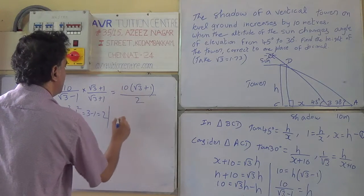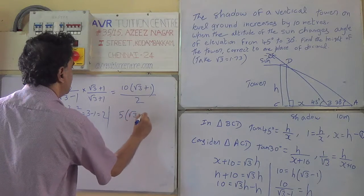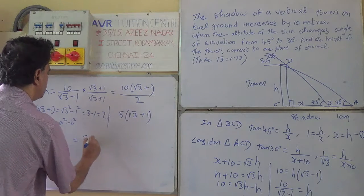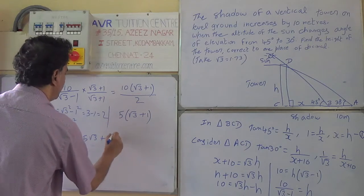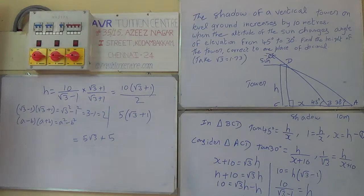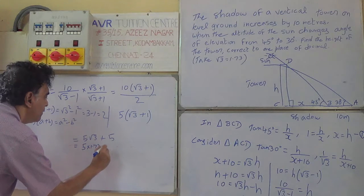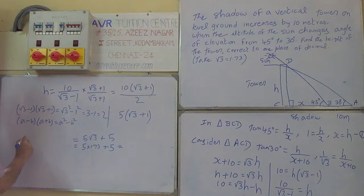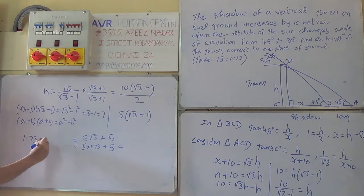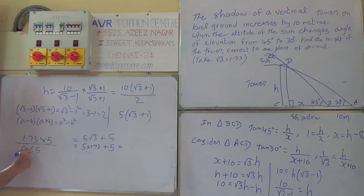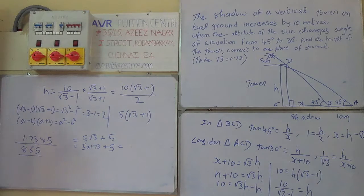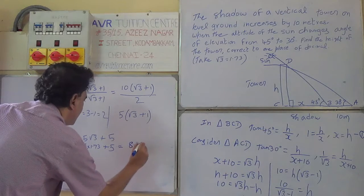This denominator becomes 2. So 10 divided by 2 is 5. Therefore H equals 5 times root 3 plus 1, which equals 5 root 3 plus 5. The value of root 3 is given as 1.73. Therefore H equals 5 times 1.73 plus 5. Multiplying: 5 times 1.73 equals 8.65, plus 5.